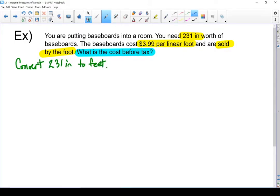My conversion factor I'm going to use: 1 foot equals 12 inches. So as I start writing that down, 231 inches divided by 12 inches per foot. I've got 19.25 feet.